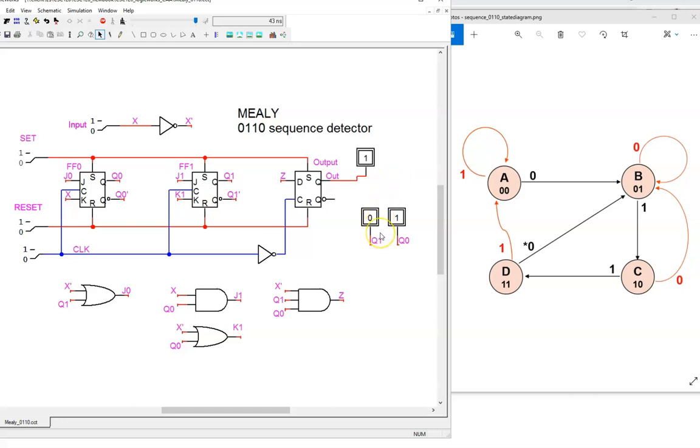Also notice that we return to state B, just as our state diagram tells us we should. At this point, we have tested our circuit a fair bit, but not completely. We still need to observe what happens with non-sequential inputs at states B, C, and D.